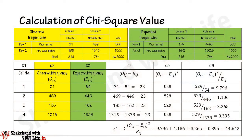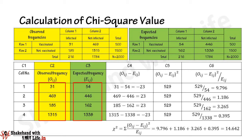Now rearrange the observed frequencies and expected frequencies in table format. Column 1 lists cell numbers 1, 2, 3, and 4. The corresponding observed frequencies in column 2 are 31, 469, 185, and 1315. The corresponding expected frequencies in column 3 are 54, 446, 162, and 1338.